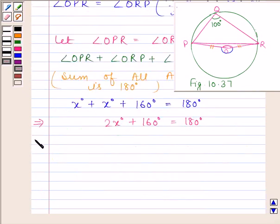This implies 2X degrees plus 160 degrees is equal to 180 degrees. This implies 2X degrees is equal to 20 degrees, and this implies X degrees is equal to 10 degrees. So, angle OPR is equal to 10 degrees.